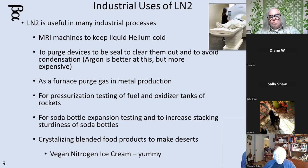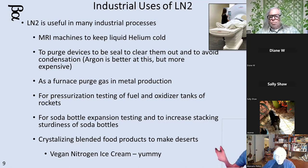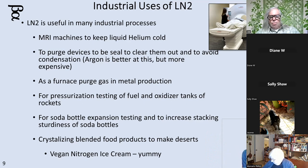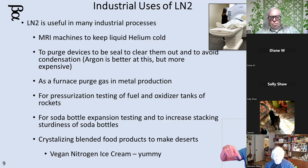MRI machines use liquid nitrogen to keep their liquid helium cold. The superconducting magnets in the MRI — the magnetic resonance imaging machine — stay superconducting because they're refrigerated with liquid helium. But if you just had liquid helium directly exposed, outside heat would warm up the helium and cause problems — it might leak or rupture, which you don't want when you've got sick people getting images. So: superconducting magnets on the inside, liquid helium on the outside of the coils, and liquid nitrogen on the outside of that to keep the helium cold.